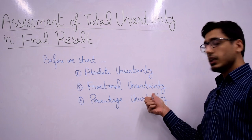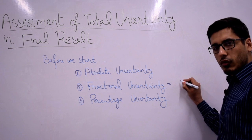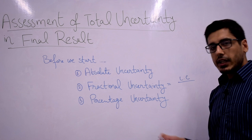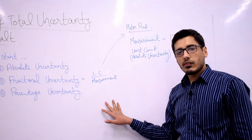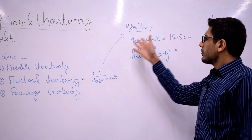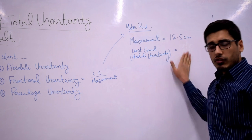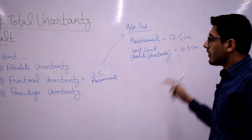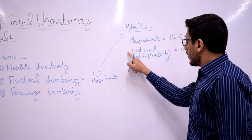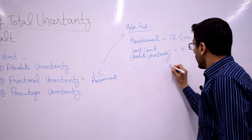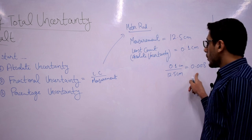Our second definition is fractional uncertainty. Fractional uncertainty is defined as the least count, or absolute uncertainty, of your device divided by the measurement that you have taken with it. For example, in the case of a meter rod, if I have a measurement of 12.5 centimeter and the least count is 0.1 centimeter, then the fractional uncertainty is least count divided by measurement, which gives 0.008. This is your fractional uncertainty.